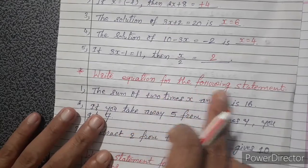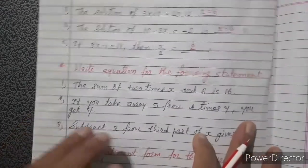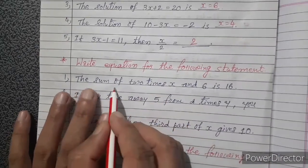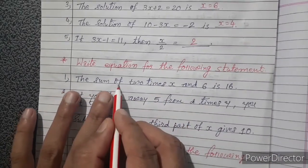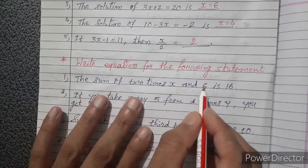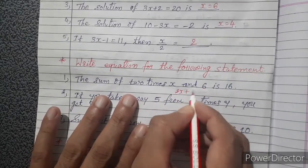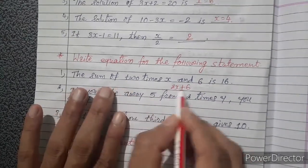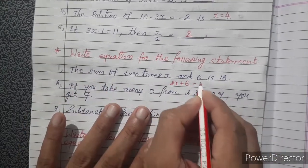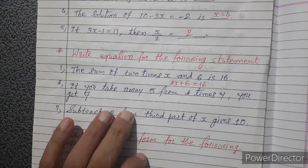Write the equation for the following statement. First: sum of 2x and 6 is 16. Sum means addition, so 2x plus 6 equals 16.